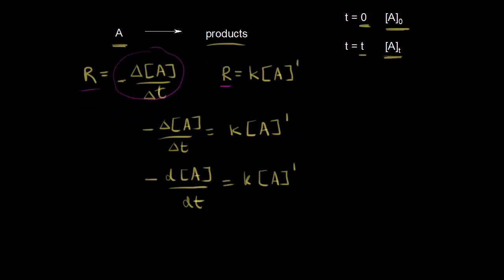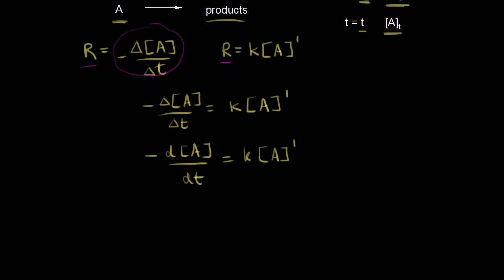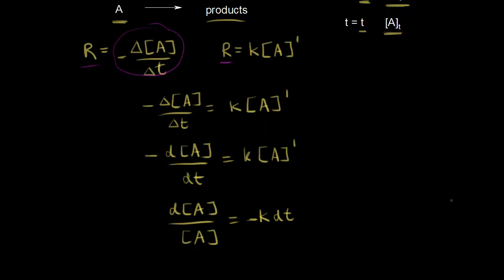Your first step for solving a differential equation is to separate your variables. You need to put all the A's on one side and t on the opposite side. We divide through by A, giving us dA over the concentration of A on the left. Then we multiply both sides by dt to get the t on the right side, giving us K dt on the right — with the negative sign on the right as well. We've now rearranged things to get ready for integration.